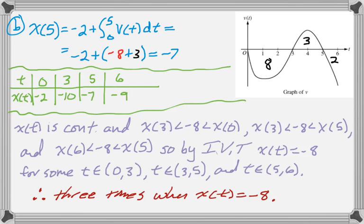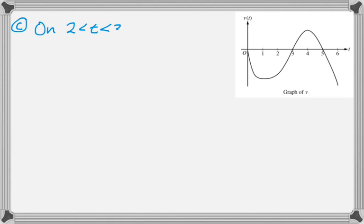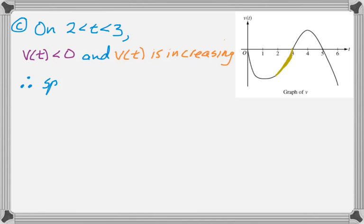Question C is, is the speed increasing or decreasing on this particular interval. We want to know is the velocity the same sign as the acceleration. Velocity is definitely negative, and since the velocity is increasing, that means the acceleration is positive. Combine those, and you get that the speed is decreasing because velocity and acceleration have opposite signs.